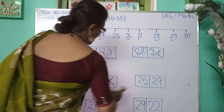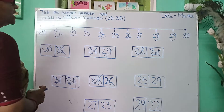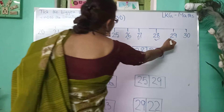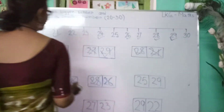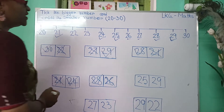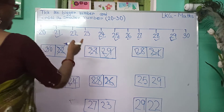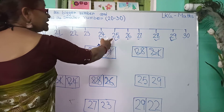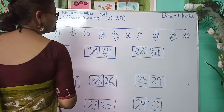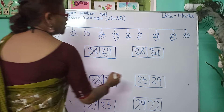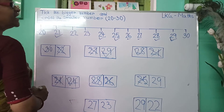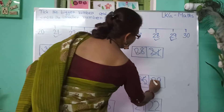Here are 25 and 29. Here is 29, and where is 25? Here is 25. Which have I written first? I have written 25 first, then 29. So, 25 is the first number, so I will put a cross. And 29 is the last number, so I will put a tick.